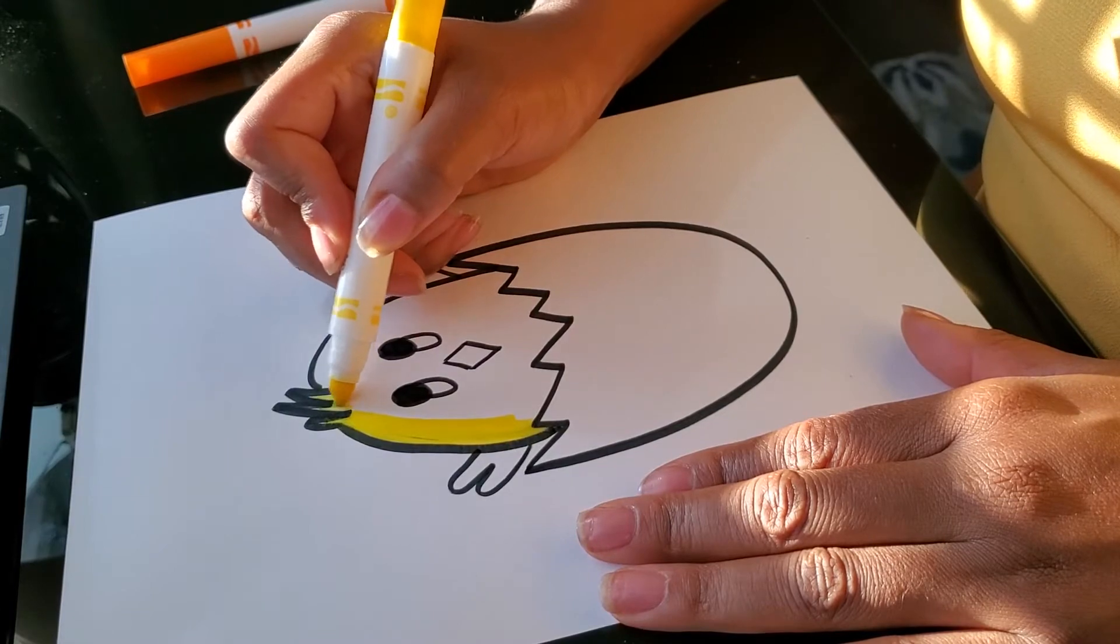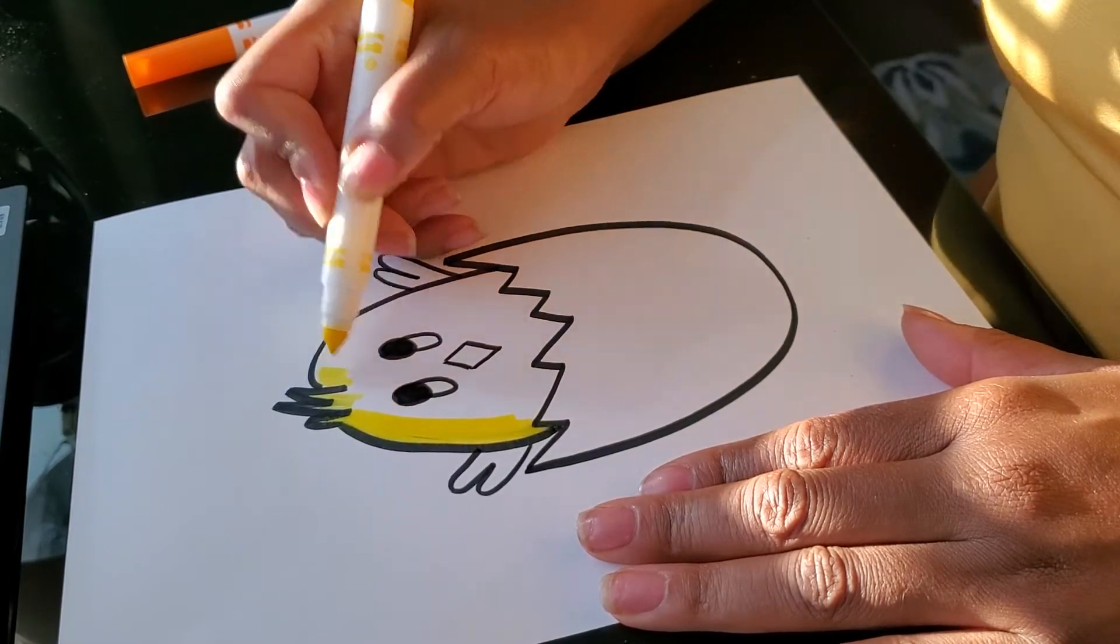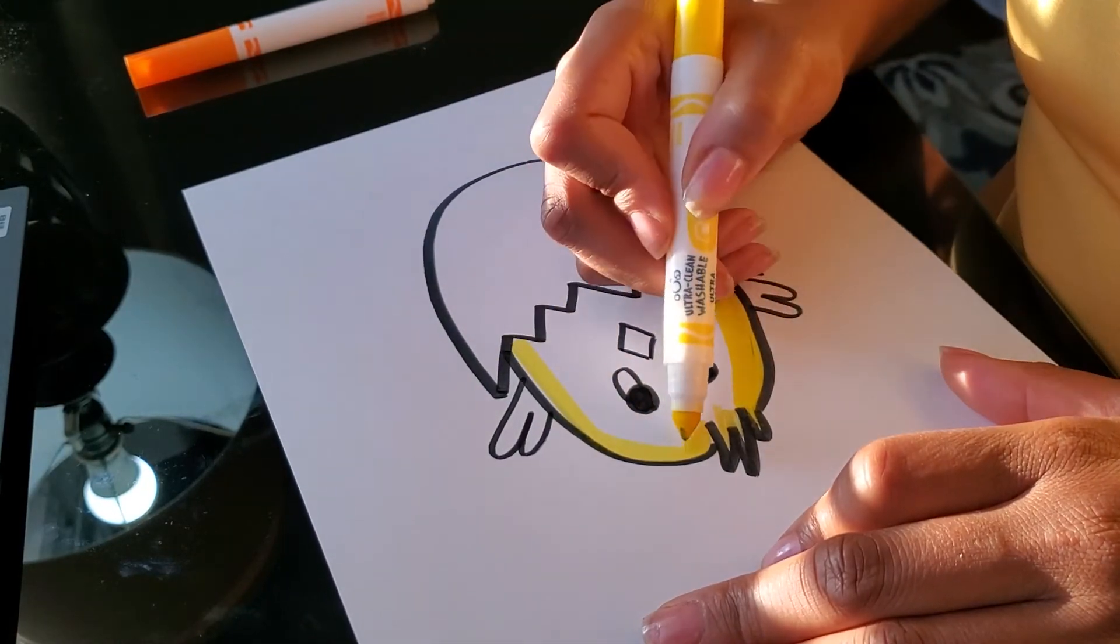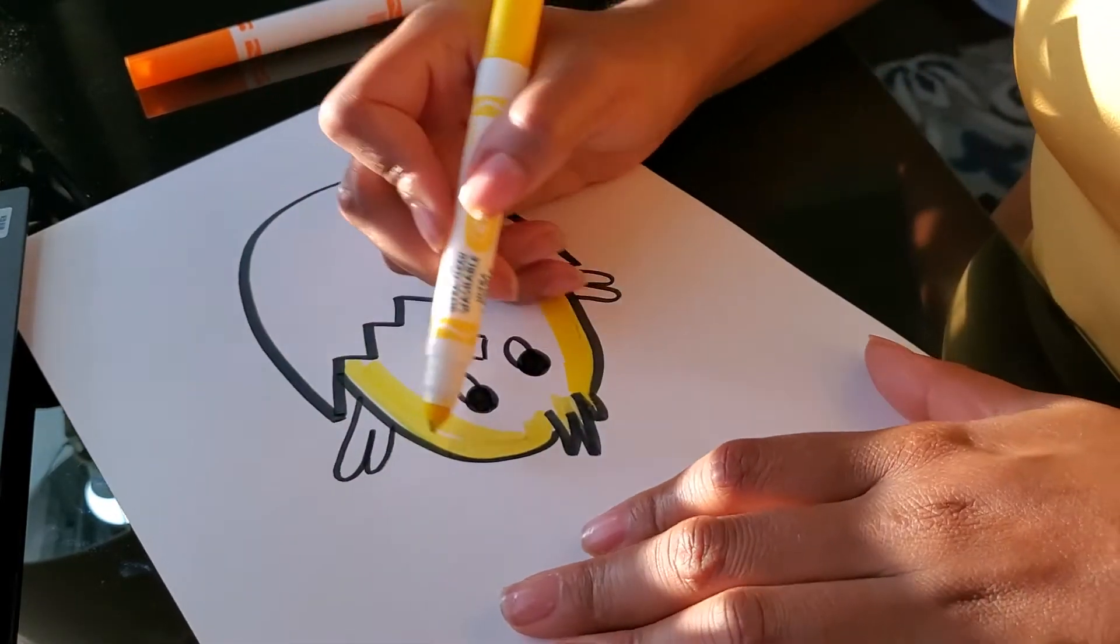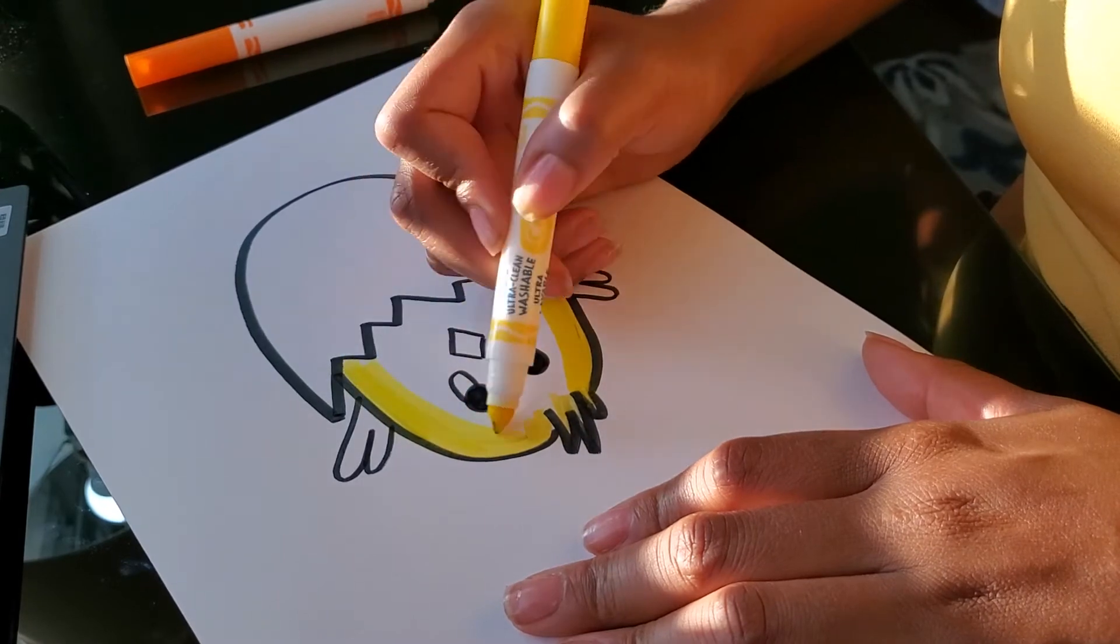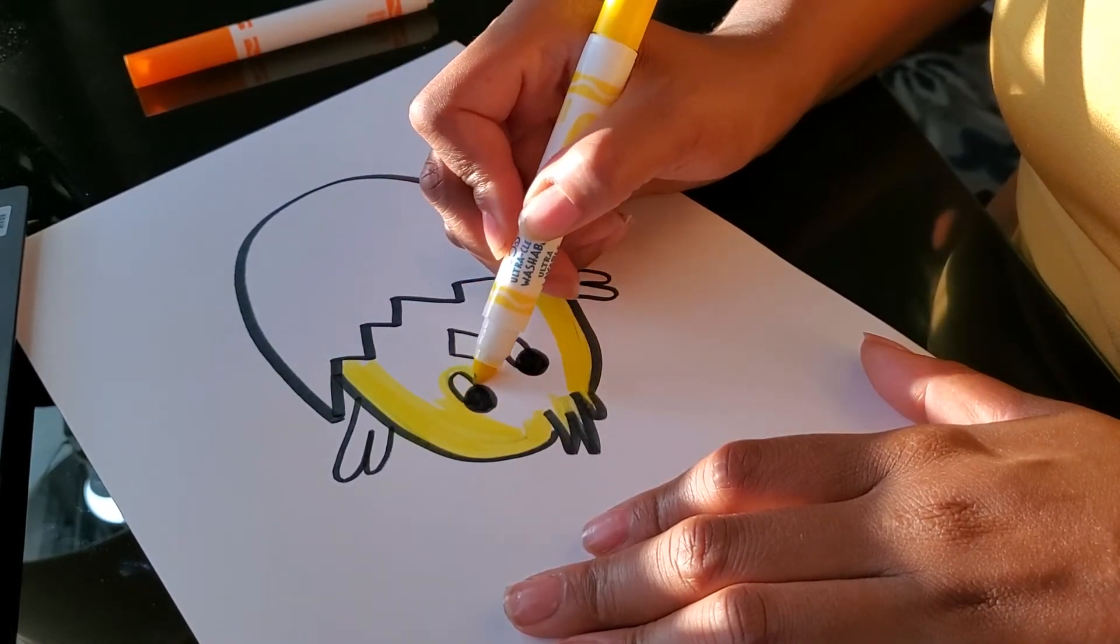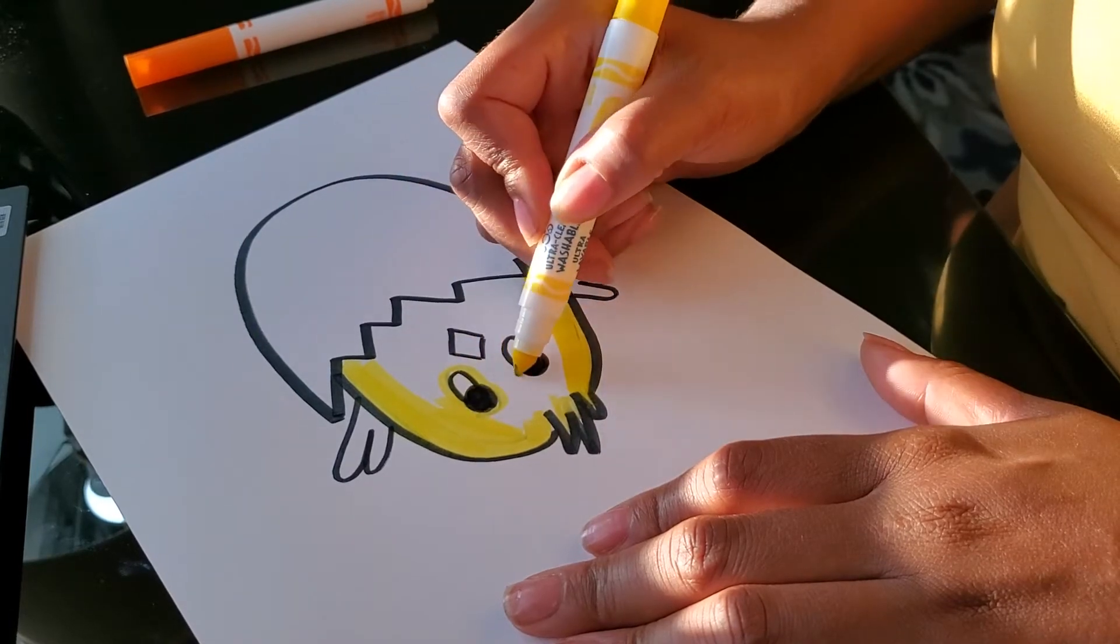Don't bump into the black because you don't want your chick to look messy. One coat of yellow is nice and light. Don't bump into his eyes. Outline everything first so that you don't bump into it.